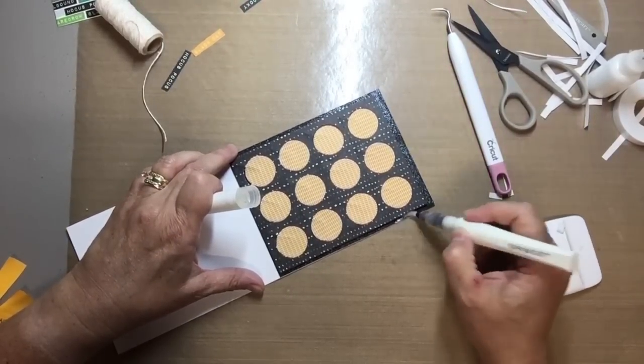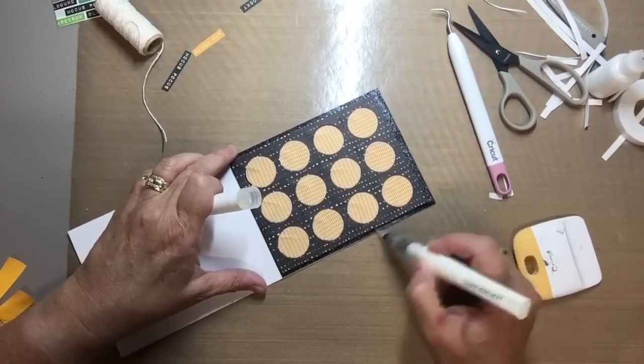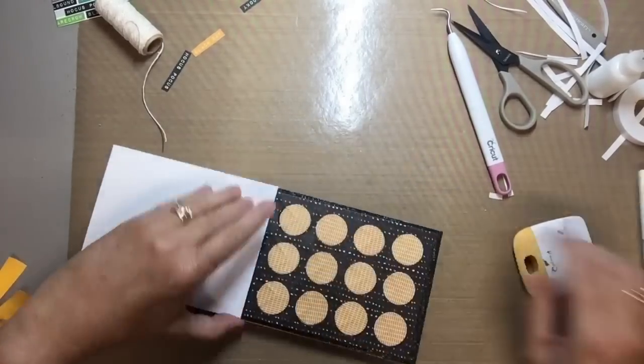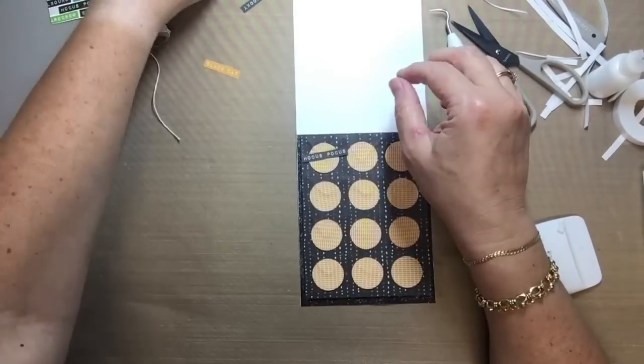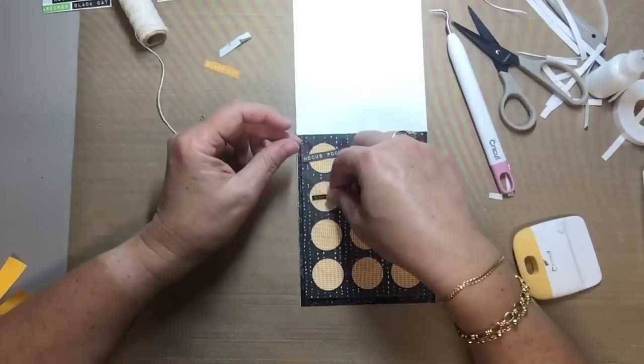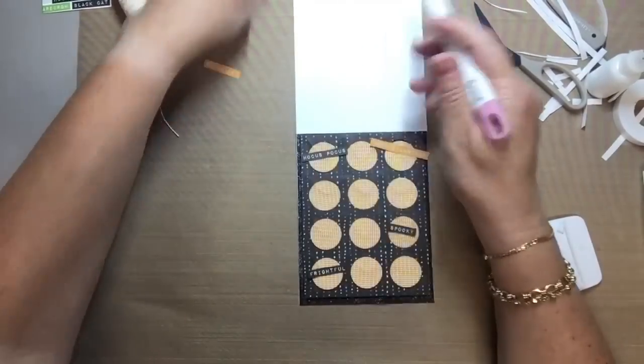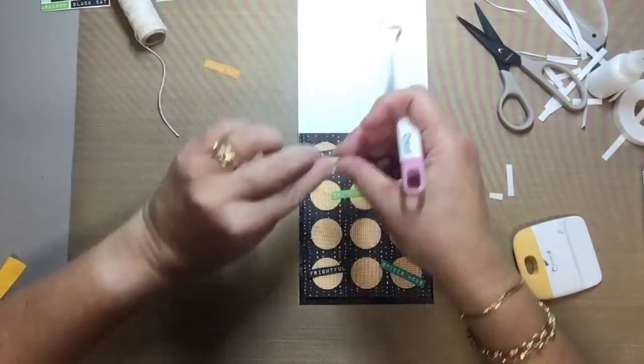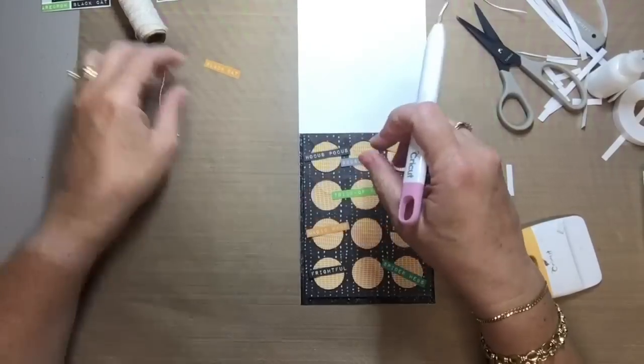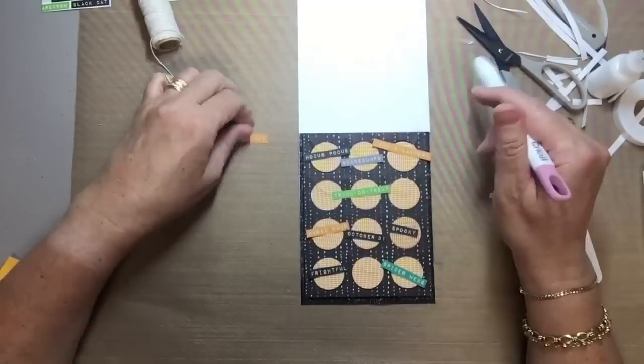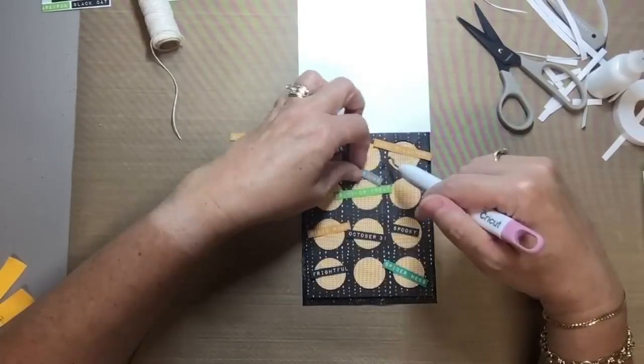And then I'm going to use that last year's release of the Halloween paper from Close To My Heart that had the little words printed on there. And I had just fussy cut out some of the words off of it, and I'm kind of messing around here to put those words, to get my colors where I want them or what I want to do here.